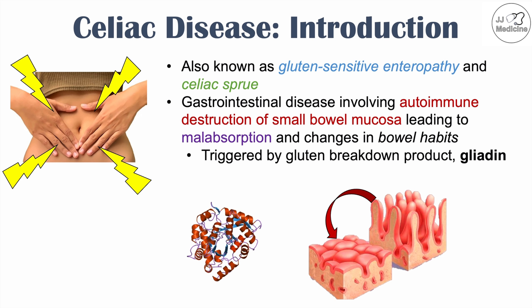When the small bowel mucosa is exposed to this gluten breakdown product, an inflammatory response is triggered. The small bowel mucosa gets inflamed and destroyed. This is a big problem because the small bowel mucosa contains villi and microvilli — finger-like projections that increase surface area to improve absorption. Losing these projections reduces the ability to absorb nutrients, leading to changes in bowel habits.